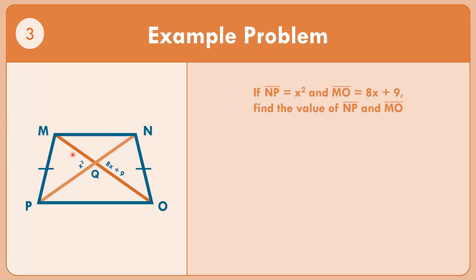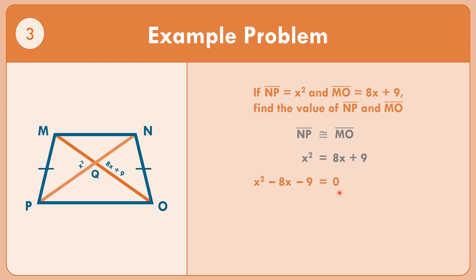Example number three: line segment NP equals x squared, and line segment MO equals 8x plus 9. Find the value of line segment NP and line segment MO. Since diagonals of an isosceles trapezoid are congruent, NP equals MO, so x squared equals 8x plus 9. Rewriting in standard form: x squared minus 8x minus 9 equals 0.